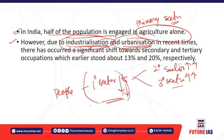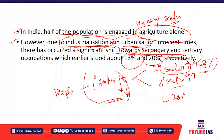There is a significant shift toward secondary and tertiary occupations. Previously, 13 percent of the population worked in the secondary sector and 20 percent in the tertiary sector, but the proportion working in secondary and tertiary sectors is set to increase significantly as people move away from primary occupations.